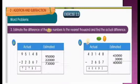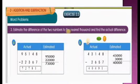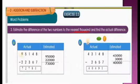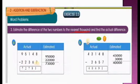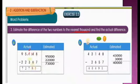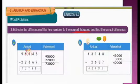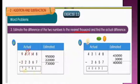Next we move to estimate the difference of two numbers to the nearest 1,000 and find the actual difference. The problem is 95,148 minus 22,967. So 8 minus 7 is 1. 4 is smaller than 6, so take borrow from 1 — it becomes 0 and this becomes 14. 14 minus 6 is 8. 0 is smaller than 3, so take borrow from 5 — it becomes 4 and this becomes 10. 10 minus 3 is 7; 4 minus 2 is 2; 9 minus 2 is 7. Actual answer: 72,781.